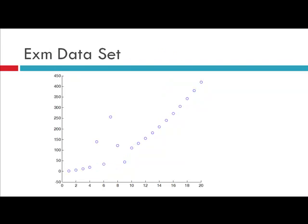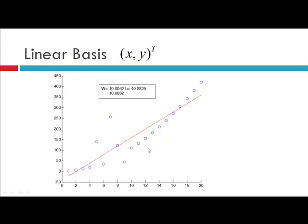This is your new dataset, again x plus y squared with added random noise. The result of linear fitting with basis [x, y] clearly shows underfitting — your line cannot fit the dataset exactly. The parameters here are: w_1 = 10.0062, w_2 = 10.0062, and w_0 (or b) = negative 40.8825. This is the problem of underfitting, as you can clearly see it cannot exactly fit our dataset.